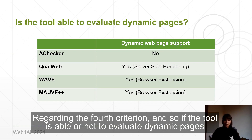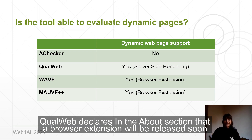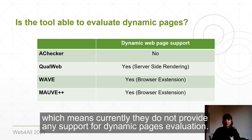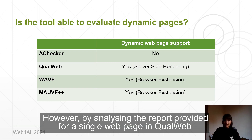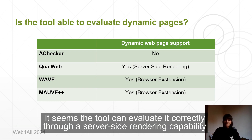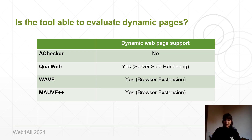Regarding the fourth criterion — whether the tool is able to evaluate dynamic pages — A-Checker does not provide any support for evaluating dynamic web pages. QualWeb declares in the About section that a browser extension will be released soon, meaning it currently provides no support for dynamic page evaluation. However, by analyzing the report for a single webpage in QualWeb, it seems the tool can evaluate it correctly due to a server-side rendering capability. Mauve++ and Wave provide a Chrome plugin to evaluate dynamic pages.